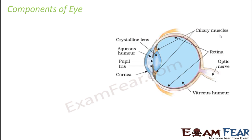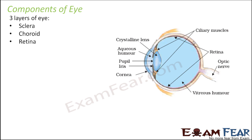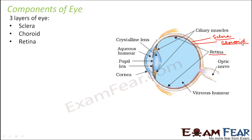So let us look at the different components of the eye. The eye is made up of three layers. The outermost layer is the sclera. The next layer is choroid, and the innermost layer is retina. Here you can see this is the outermost layer which is sclera, then the choroid, and the innermost layer that is the retina. So these are the three layers of the eye.